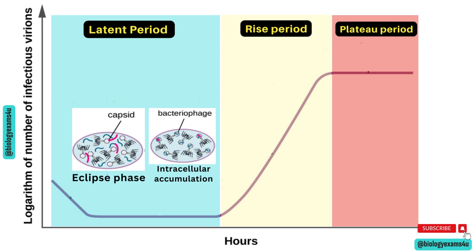After that there is a sudden rise, which is called the rise period. Following the latent period, the rise period begins when the host cell lyses or bursts, releasing newly formed phage particles into the surrounding medium. In this phase there is a rapid increase in the number of detectable phage particles.